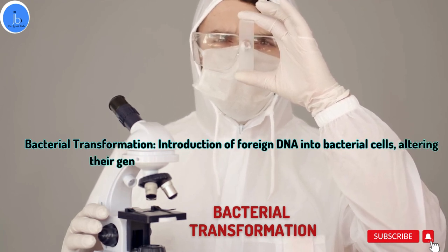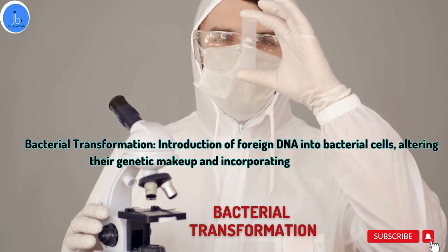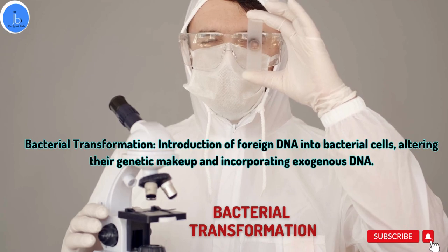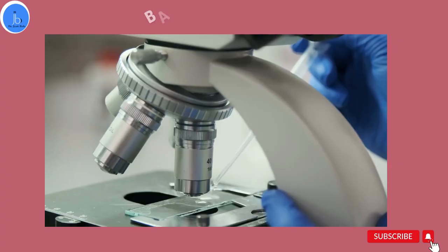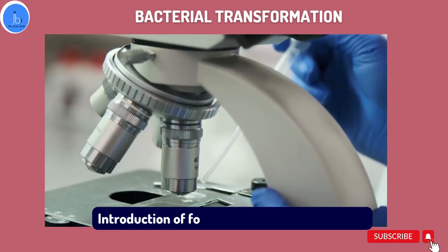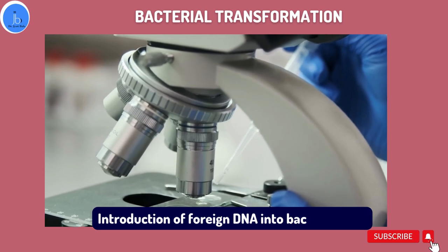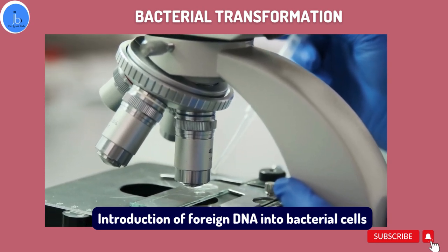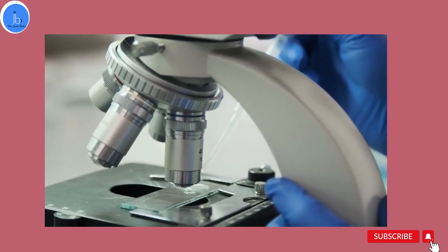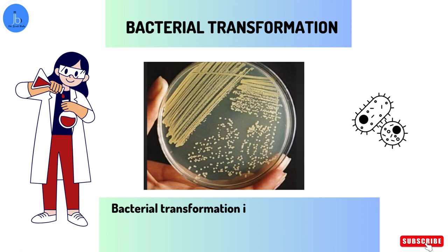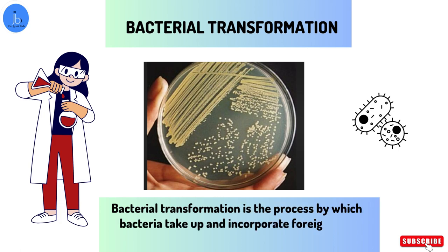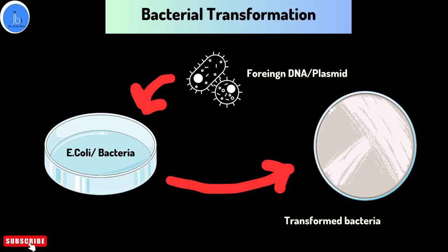Now let's delve into the definition and explanation of bacterial transformation. In a precise way, bacterial transformation is a process by which bacteria take up and incorporate foreign DNA molecules, such as a plasmid. This enables the bacteria to express new traits or produce specific proteins encoded by the introduced DNA. As a part of cloning, it's like giving the bacteria a brand new set of instructions to follow.